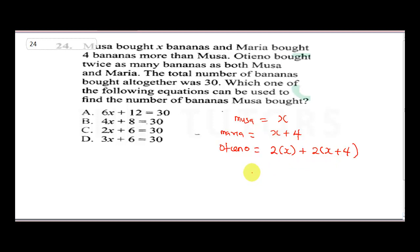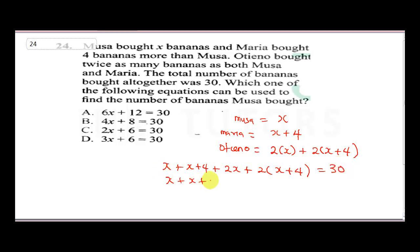The total number of bananas bought was 30, so we sum everything: x plus (x plus 4) plus 2x plus 2(x plus 4) equals 30. Expanding: x plus x plus 4 plus 2x plus 2x plus 8 equals 30. Collecting like terms: 6x plus 12 equals 30.